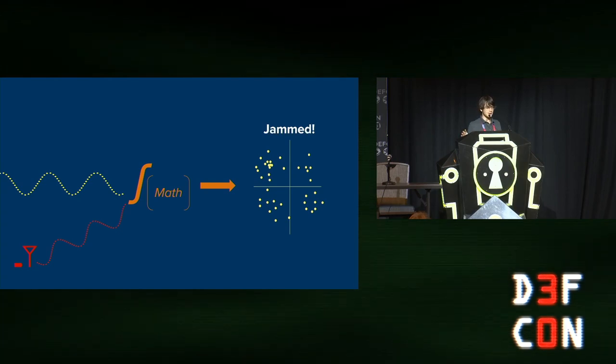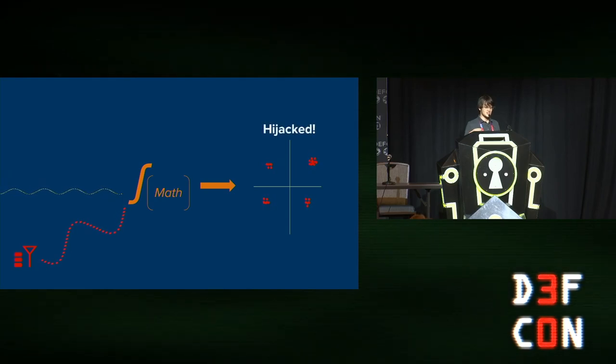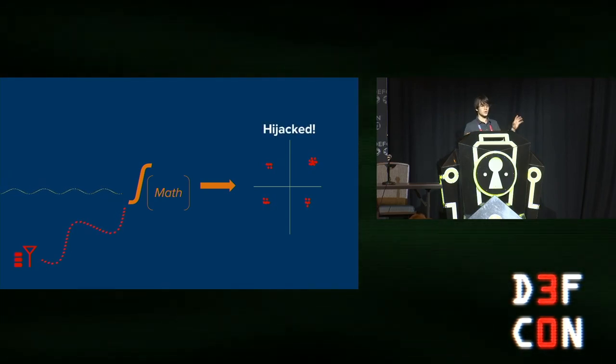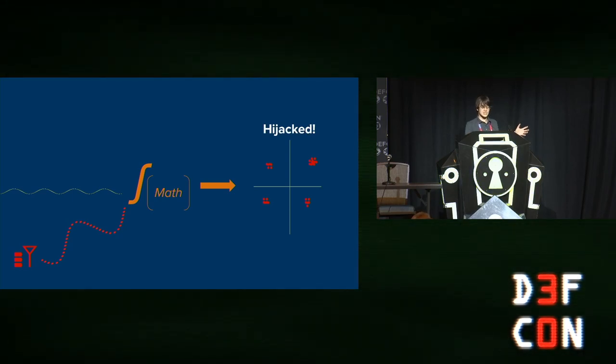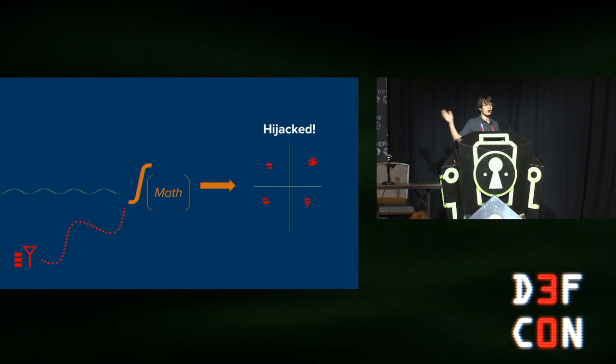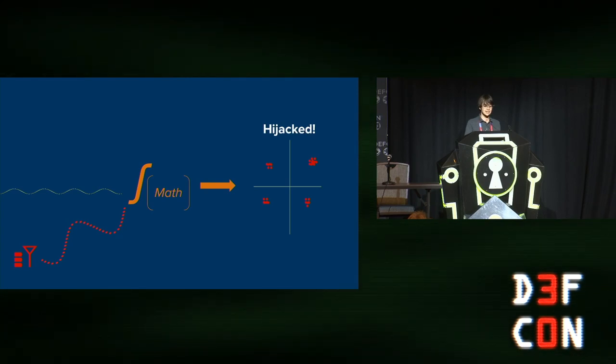Even more interestingly, if our attacker has a lot of power, if their jammer is really, really strong, they can actually engage in a hijacking attack. When you add their malicious signal to the very weak legitimate signal, the legitimate signal is basically background noise. And you end up with a nice neat constellation again, but with the wrong information. So this is how something like the Captain Midnight attack is possible.